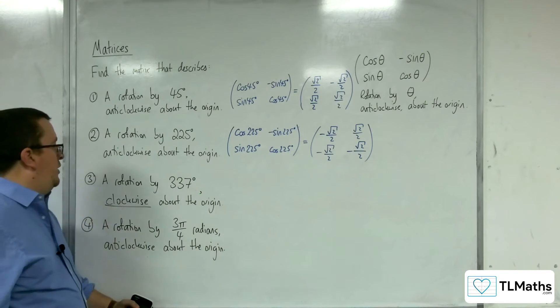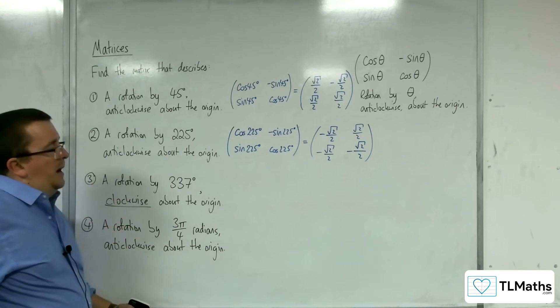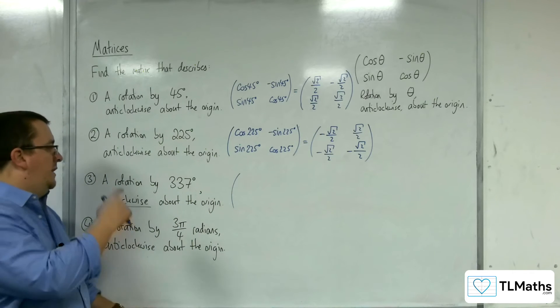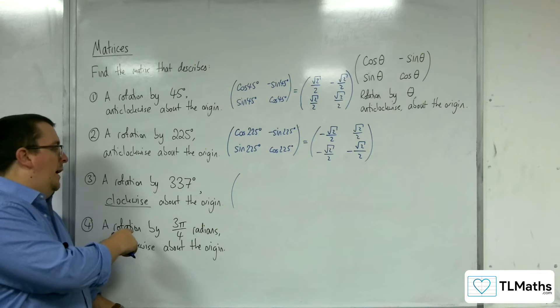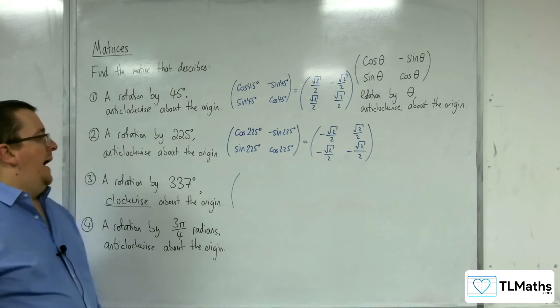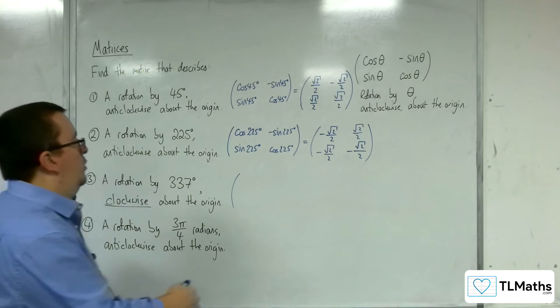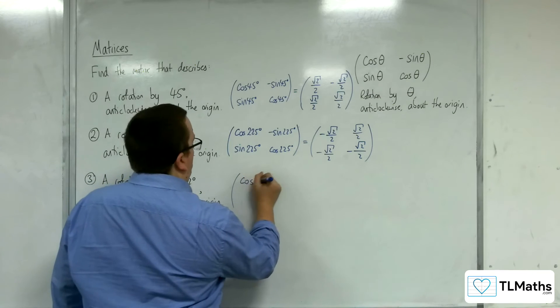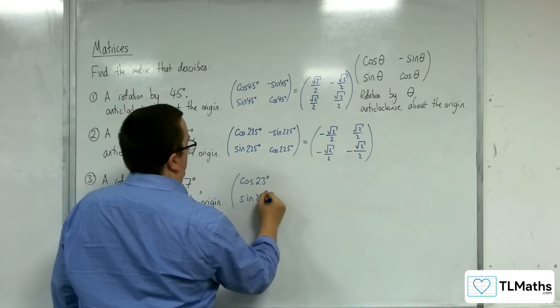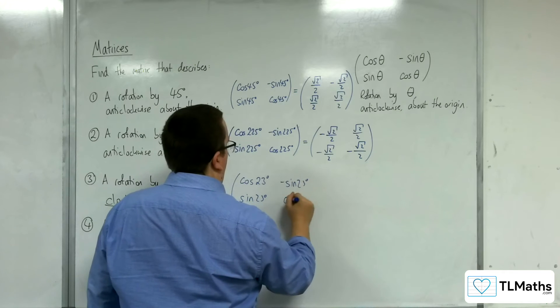Right. Now number three, a rotation by 337 degrees clockwise about the origin. Well, we know that if I'm rotating clockwise about the origin by 337 degrees, then it's the same as rotating by 23 degrees anticlockwise. So cosine 23, sine 23, negative sine 23, and cosine 23.